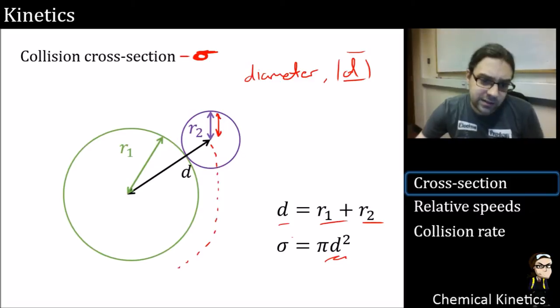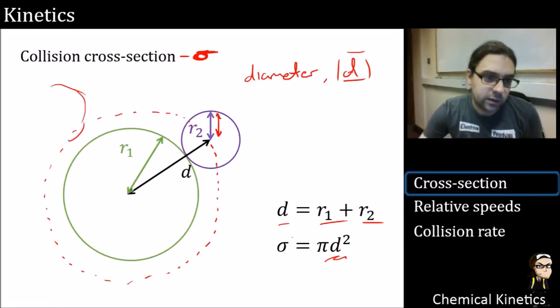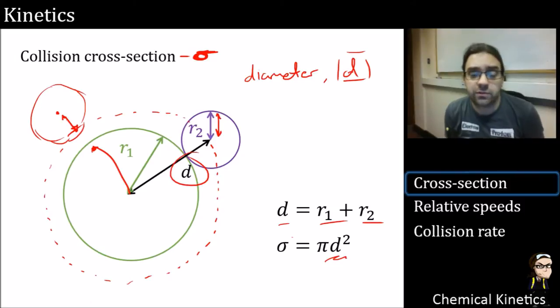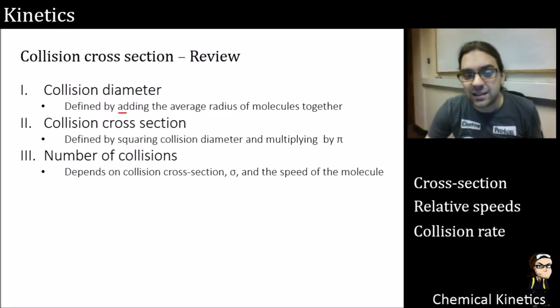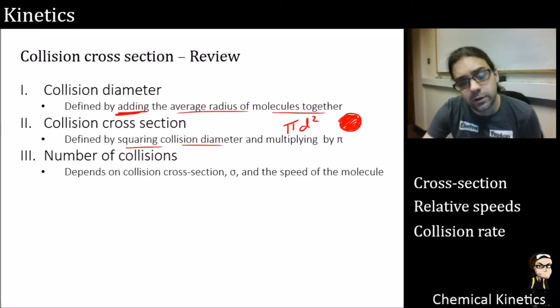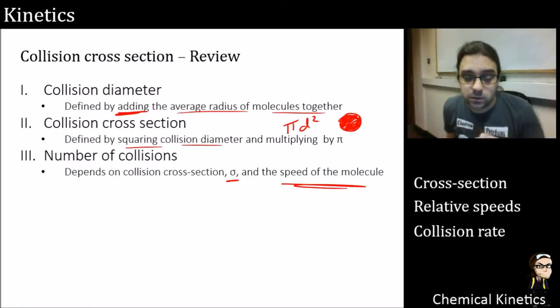It is this area slightly outside the radius of one molecule—it's defined as the radius of two of them added together. If we had another molecule here, its center is outside that dotted red line. The distance between them is greater than d, the collision diameter. This is how we define it: r1 plus r2. Let's review: collision diameter defined by adding the average radius of molecules together, the cross-section is from squaring the collision diameter and multiplying by pi. That's just getting a circle, so it is an area. The number of collisions is going to depend on this cross-section and the speed of the molecule, which we'll get onto next.